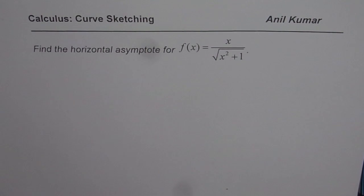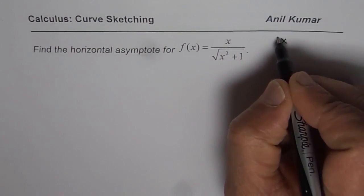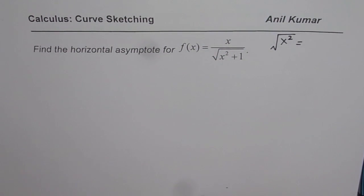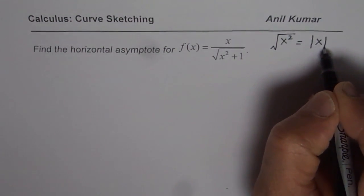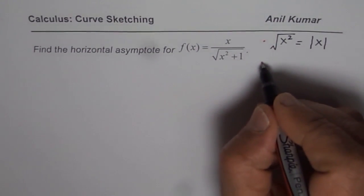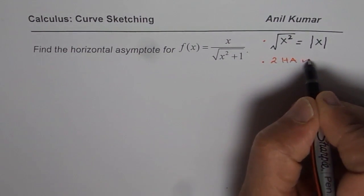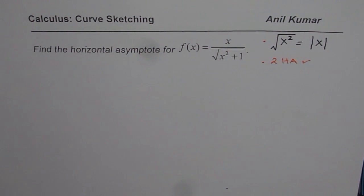To solve this question, you should know two things. First, what is square root of x squared? If you think it is x, you are wrong. It is absolute x — |x| — and that is one of the major things which will help you answer this question. Second, you need to understand that for a function we can have two horizontal asymptotes. Some students think that a horizontal asymptote can only have one.